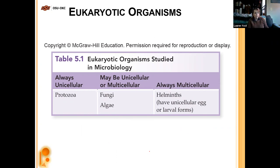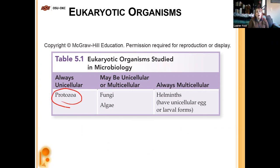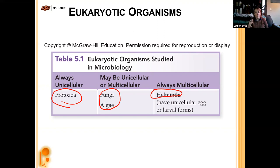Breaking down the groups: protozoa are always unicellular. Fungi and algae can be either unicellular or multicellular. Helminths — the worms — are always multicellular in their main breeding form, though they may have unicellular larval or egg forms.